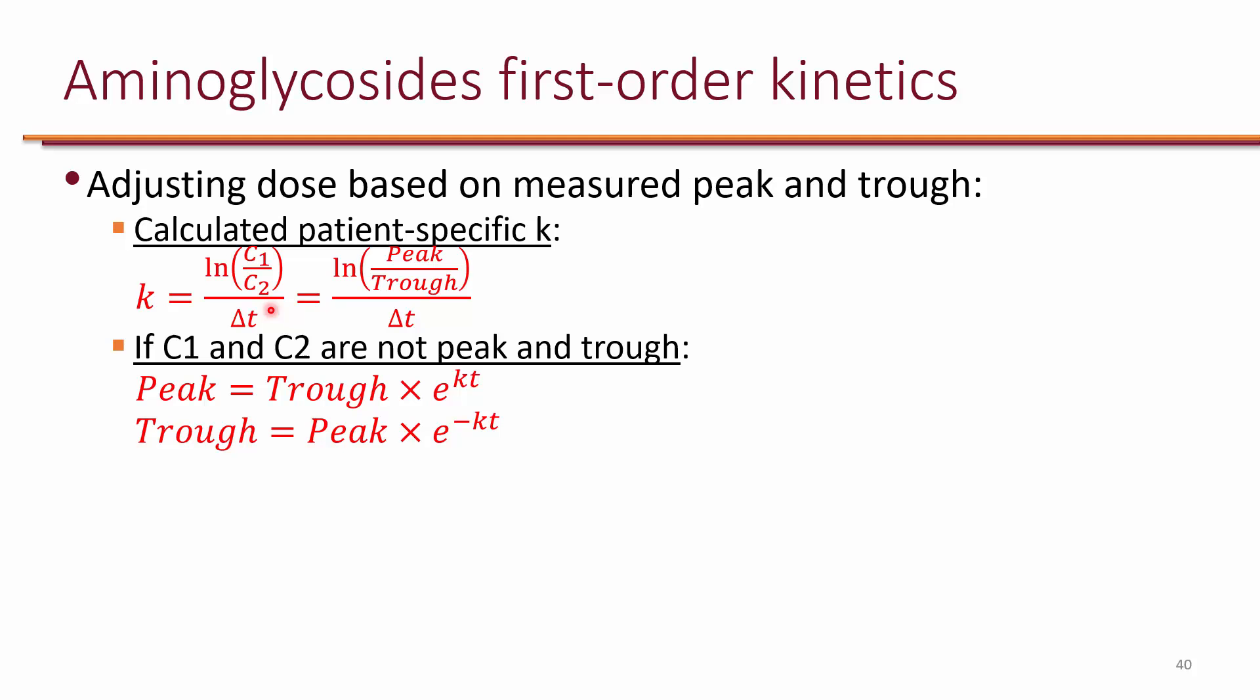Of course, if C1 and C2 are not true peak and trough, you can actually extrapolate. So you can say the equation is peak equals trough times e to the KT. Or another way of saying it is trough equals peak times e to the negative KT. Again, these are all the same equation. It's just a matter of rearranging them to get what you're looking for.